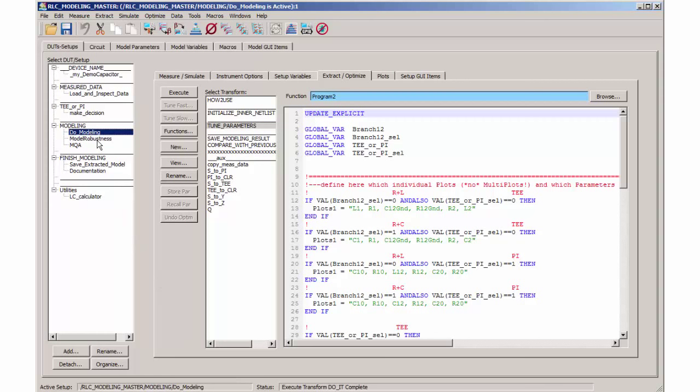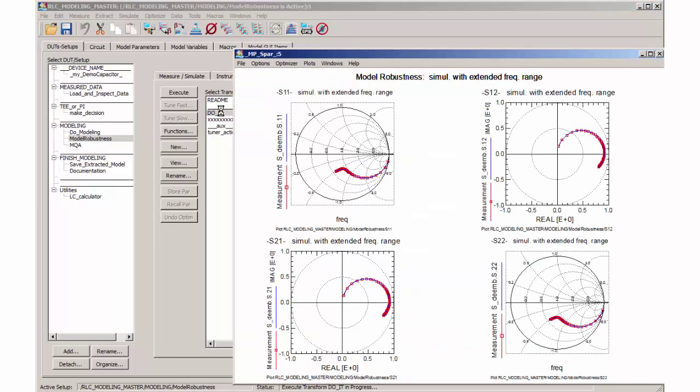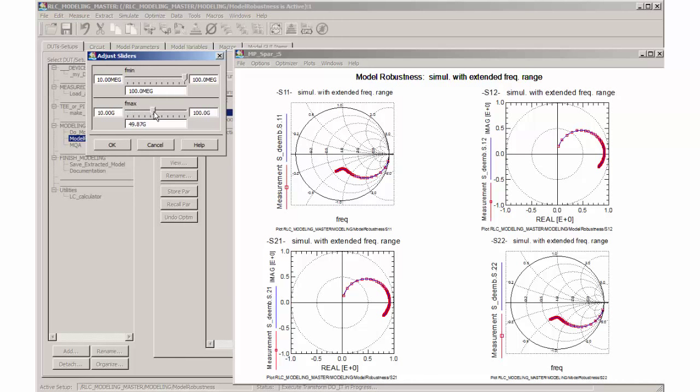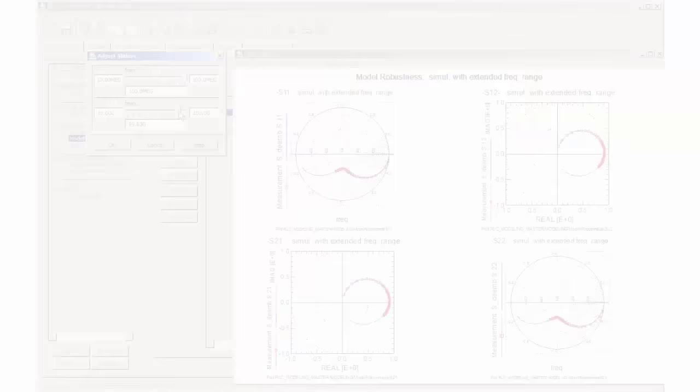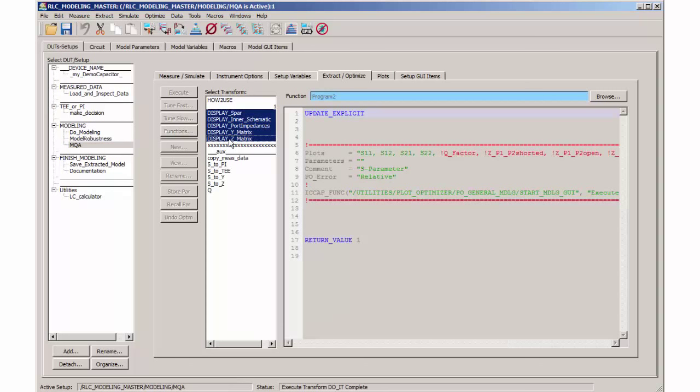Before delivering the model to the circuit designers, it's a good practice to verify the model against frequencies higher than measured. I have implemented such a test in my IC-CAP project, and here is the result. The model does not exhibit weird traces above the measurement frequencies. Another best practice is to verify the model behavior under all kind of port terminations. This is done in the section MQA in the IC-CAP project.